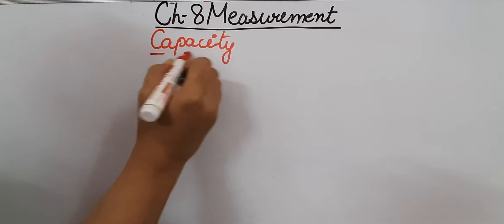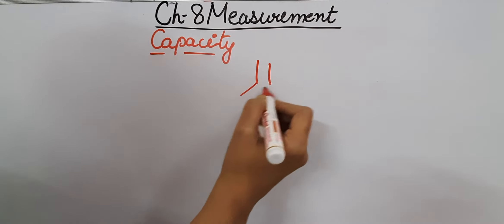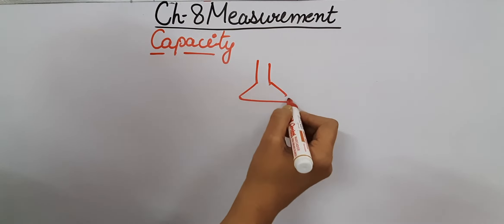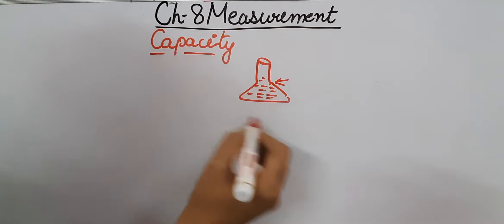Hello children, welcome to another video of chapter 8 measurement. In this video we are going to learn about capacity. Capacity is the amount of liquid any beaker can hold. If this is a conical flask, the amount of liquid which it can hold is known as the capacity of the flask.